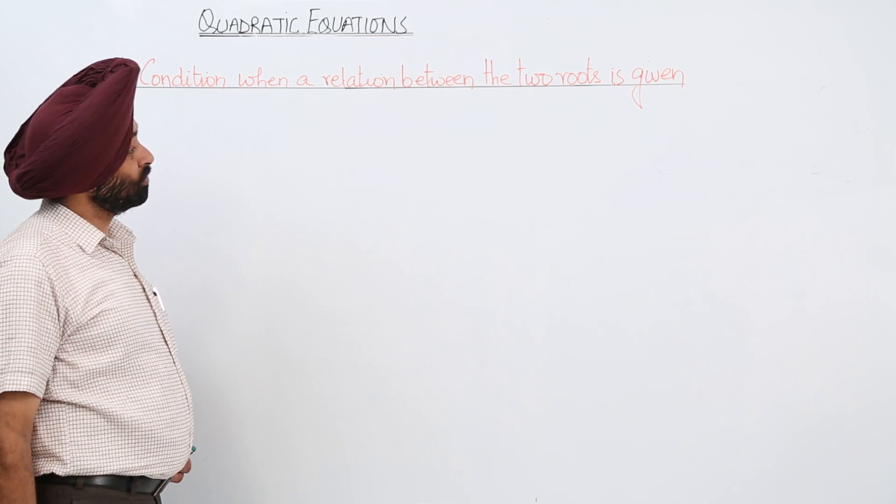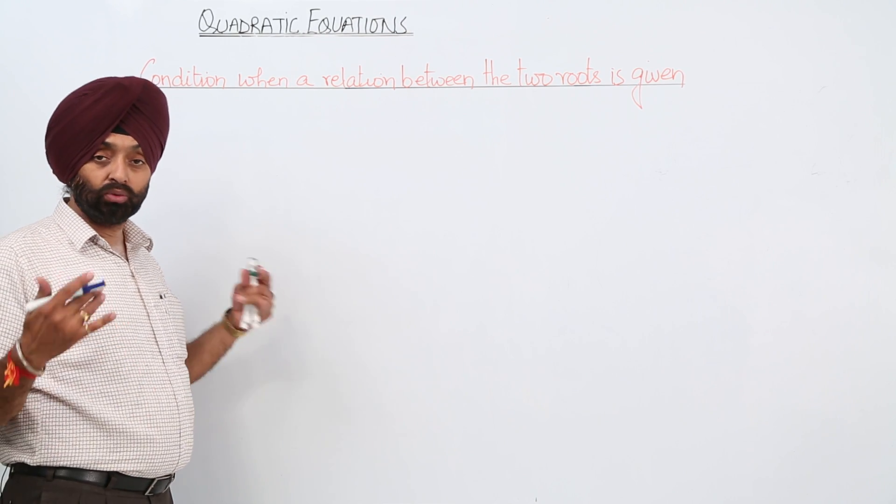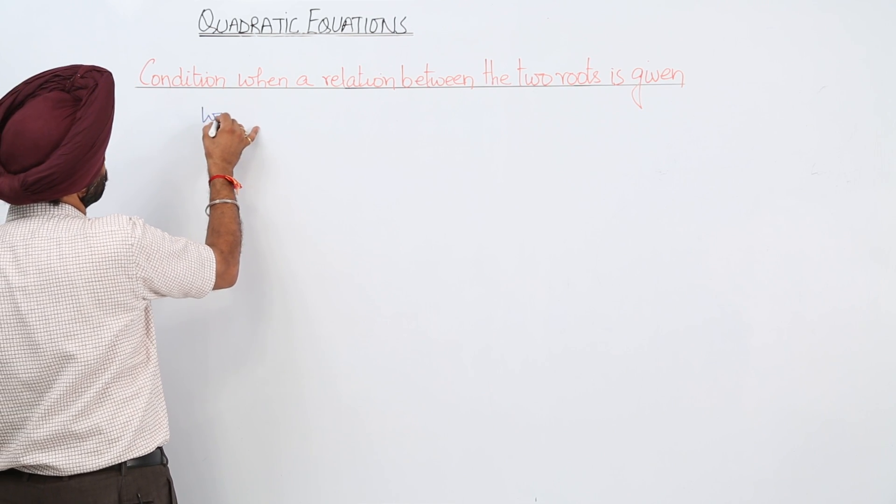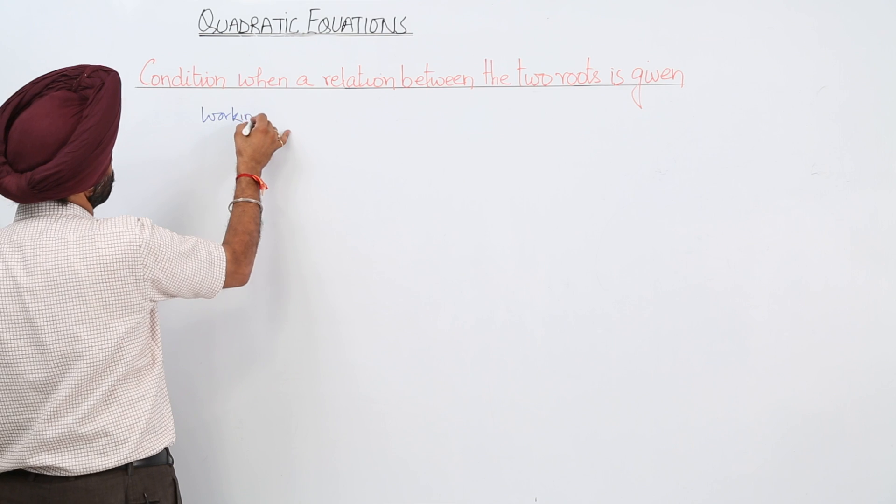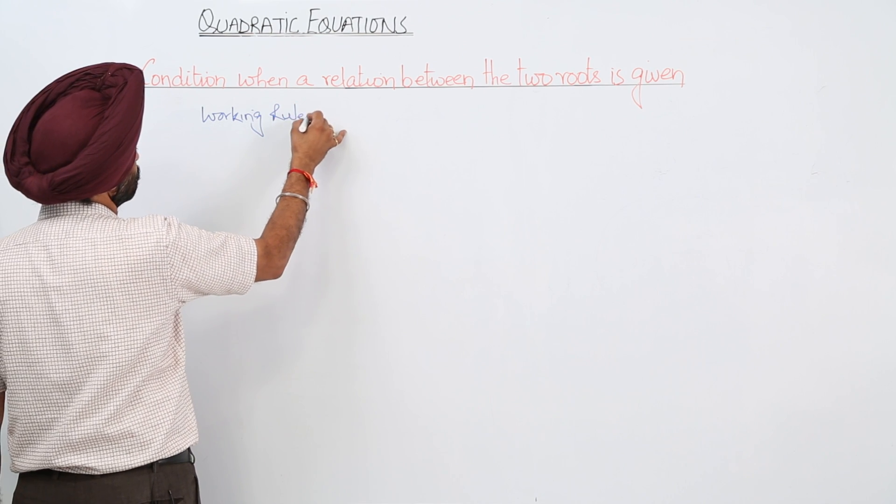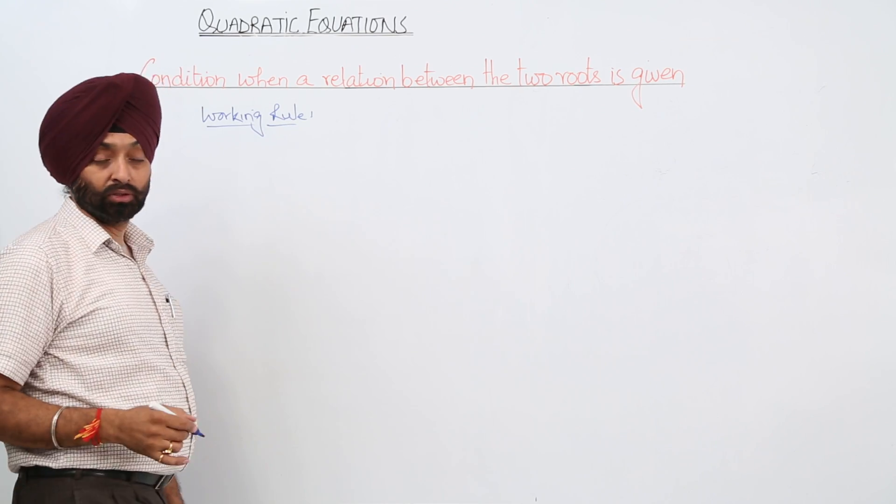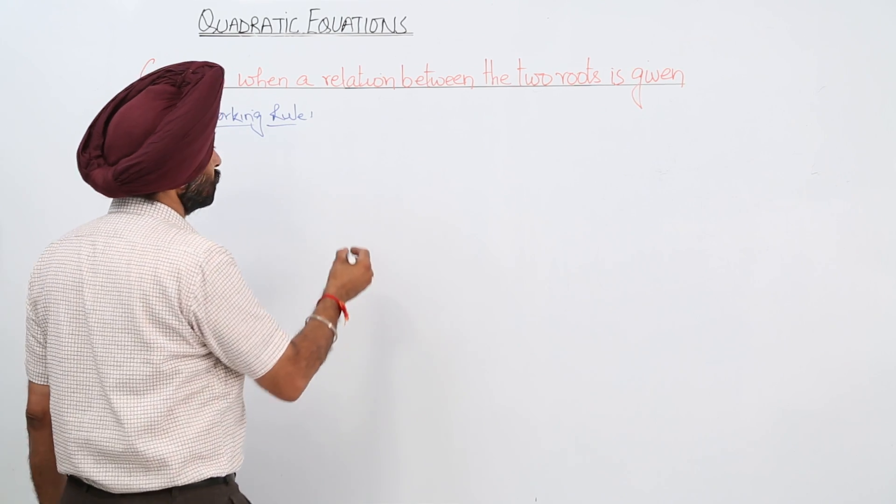Condition when a relation between the two roots is given. Now how to proceed? Let's first go for the working rule. Working rule for finding a condition when a certain relation is given between the two roots. Now working rule number 1.